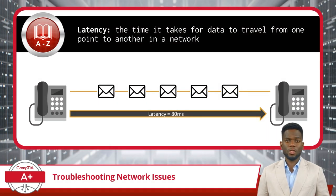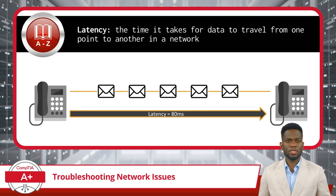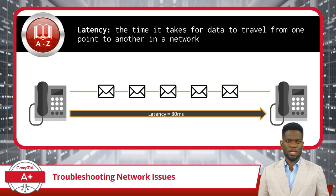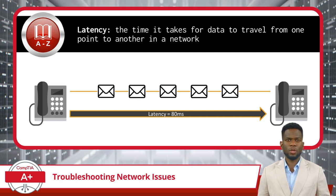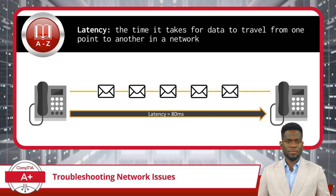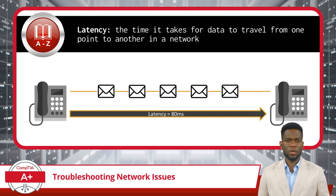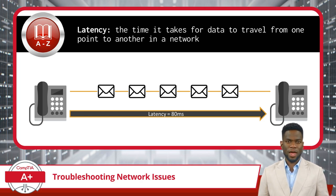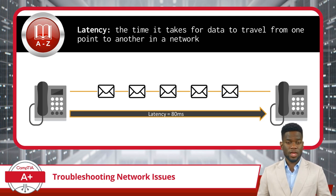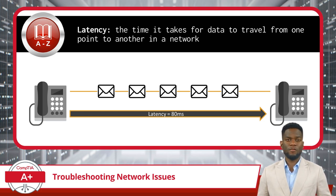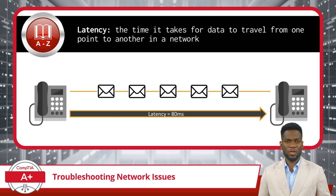Latency, in simple terms, refers to the time it takes for data to travel from one point to another in a network and is often measured in milliseconds. This can also be thought of as the delay between sending a message and receiving a response. Several factors can contribute to latency issues. The physical distance between devices has a direct impact on latency — the farther apart two devices are, the longer it takes for data to travel between them. Additionally, network congestion resulting from excessive traffic can lead to delays or even loss of data packets, thereby increasing latency.